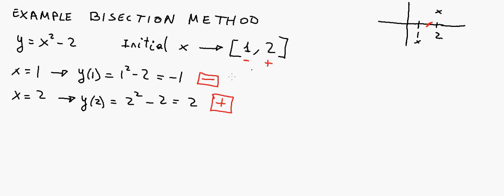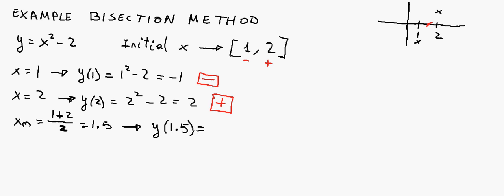The bisection method gives us a formula to calculate the midpoint. Basically, we split the interval into two halves, and then we check — looking at the signs of the function at each of the points — if the root happens on the left or on the right of that midpoint. So we calculate the midpoint xm, which is going to be 1 plus 2 divided by 2, so it's 1.5. Then we check what the function is at that point: y at 1.5 equals 1.5 squared minus 2, and the function at that point is 0.25, which is positive.